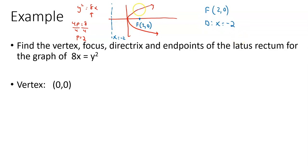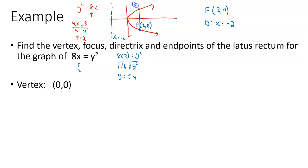Now, the endpoints of the latus rectum. There's the latus rectum — we can call it LR for short. It goes from a point here on the parabola to a point there on the parabola. We know that x is equal to 2, so let's replace that x with a 2. We get 8 times 2 equals y squared. If 16 equals y squared, then taking the square root of both sides, y equals plus or minus 4. The x-coordinate is 2, so the y-coordinate on top is 4 and on the bottom is negative 4. So the endpoints of the LR are (2, negative 4) and (2, 4).